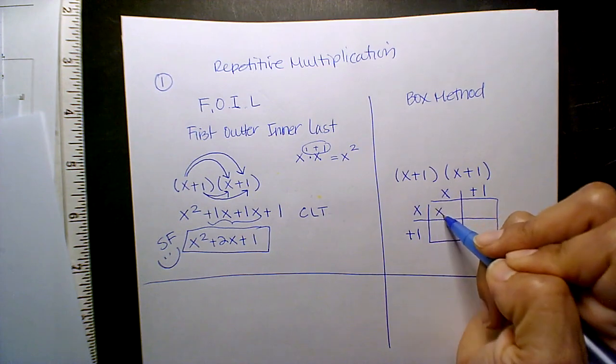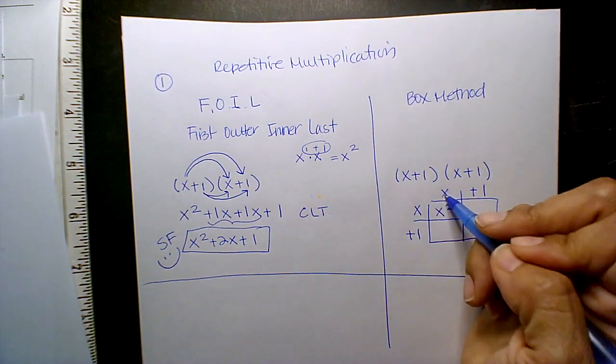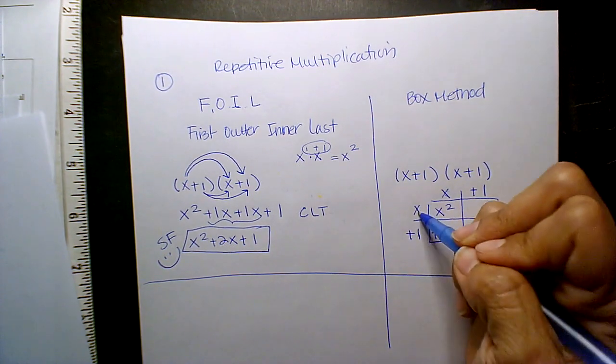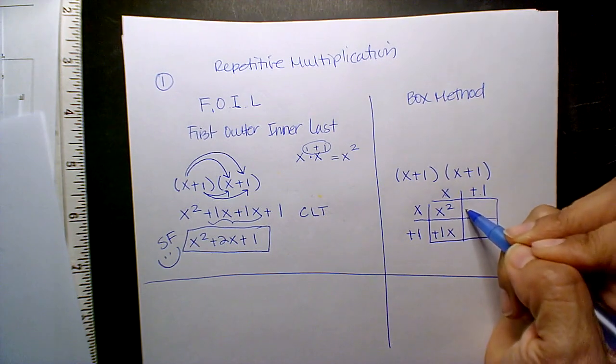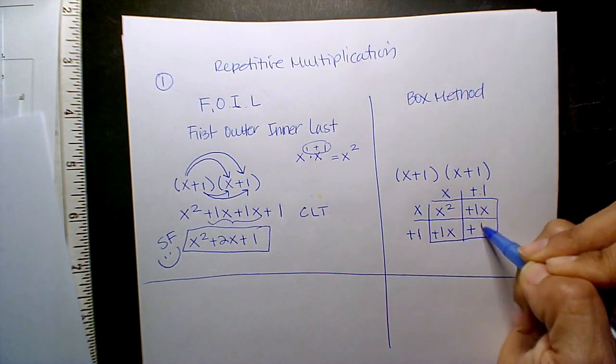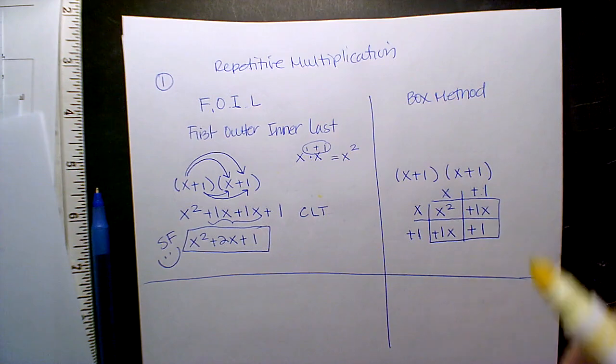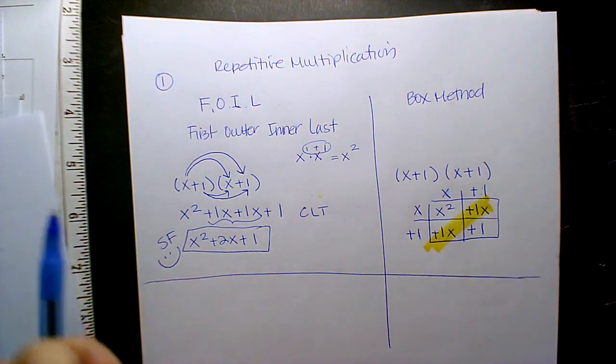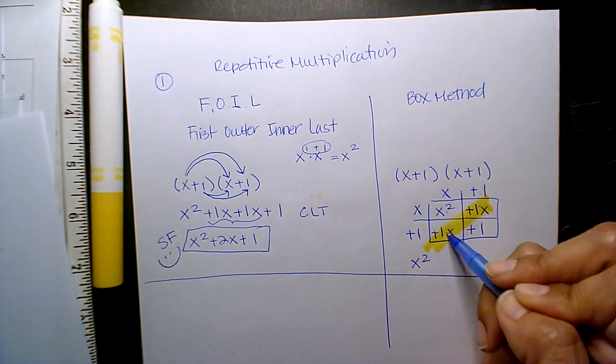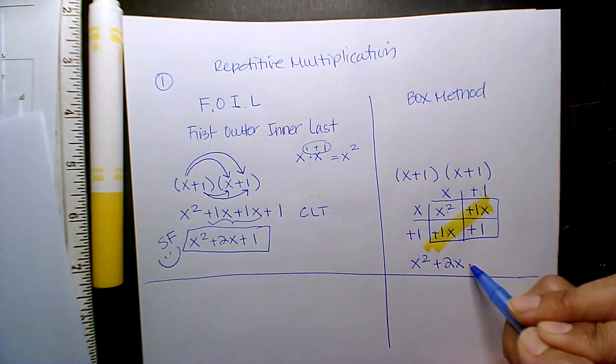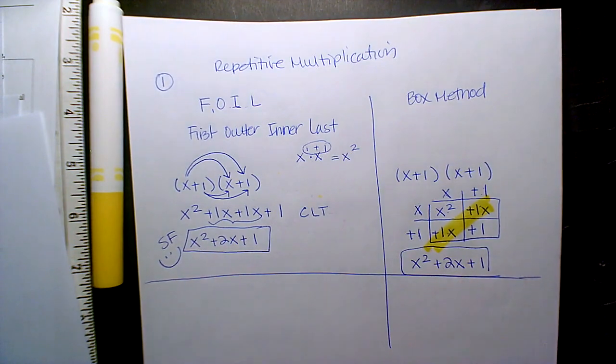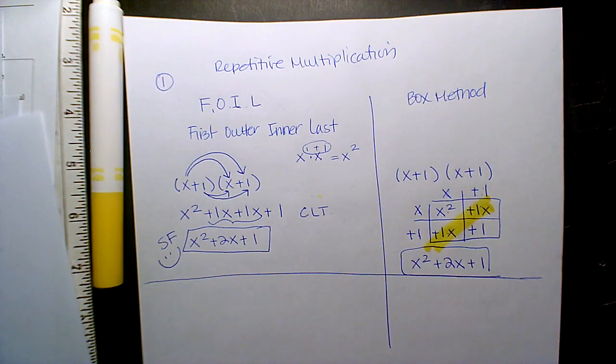So what's x times x? X squared. X times 1? 1x. What's x times 1? 1x. And then what's 1 times 1? 1. Okay, now your like terms will be diagonally. So x squared, 1x plus 1x is 2x, and then there's my constant 1. And I get the exact same answer. It's your preference. It's what you like.